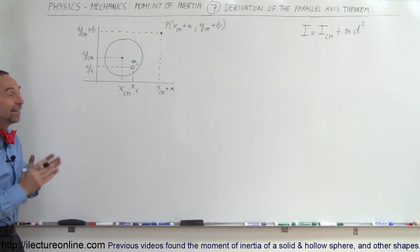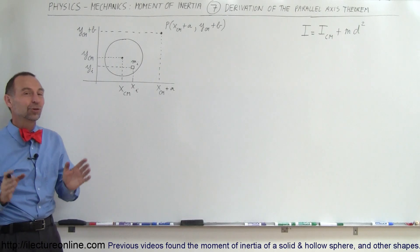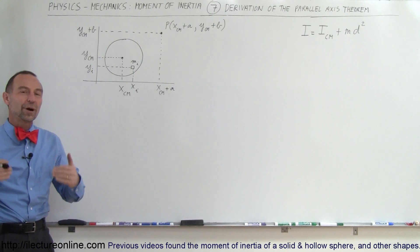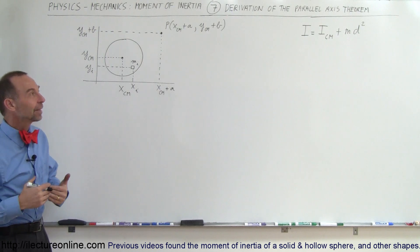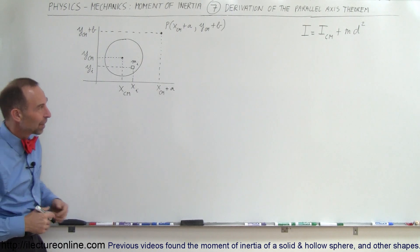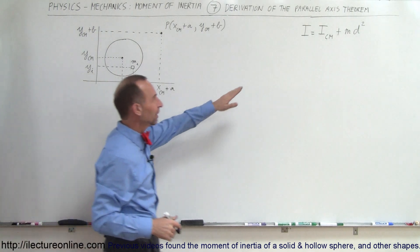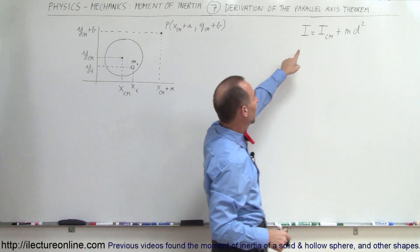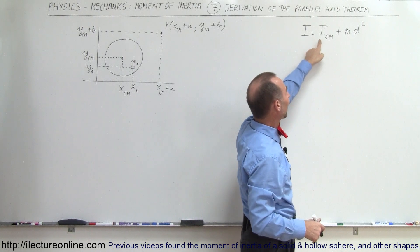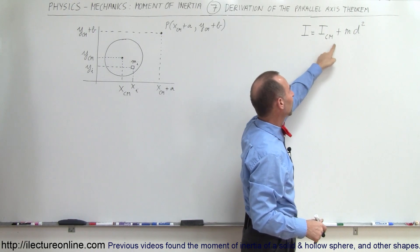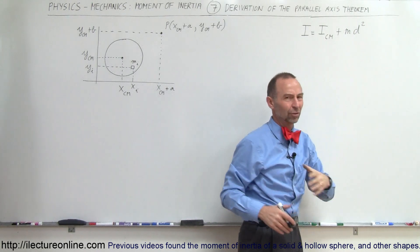Welcome to iLectureOnline. In this video we're going to show you where the parallel axis theorem came from. The parallel axis theorem states that I is equal to I at the center of mass plus m·d².